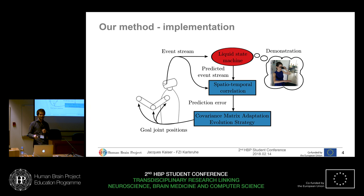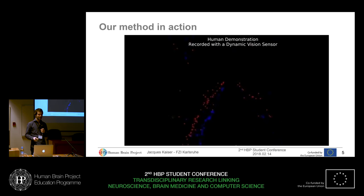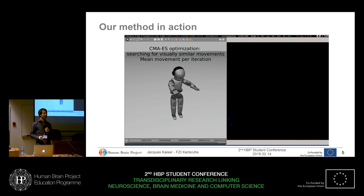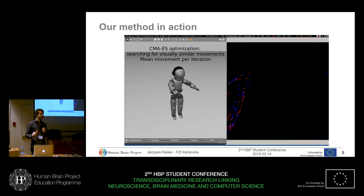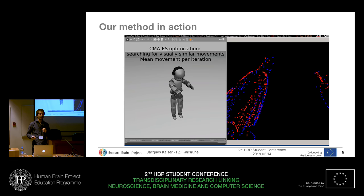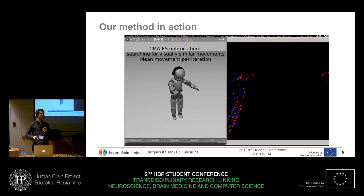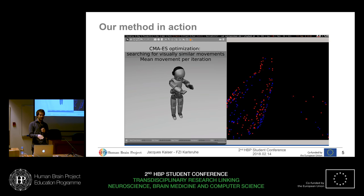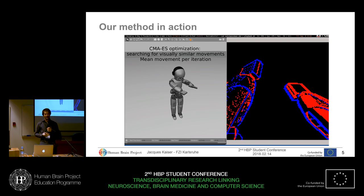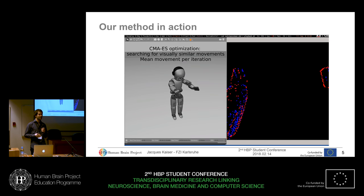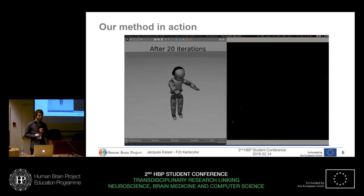Now I'm going to show you the actual experiment in a video. The first part of the video is the human demonstration — pay attention. It's basically two arms moving closer to each other, recorded with this dynamic vision sensor. Then we have an iCub in simulation with this optimization going on. The robot learned to predict the demonstration it saw from the human, and it tries different movements. If it can't predict well, the optimization keeps going. We're looking at the robot performing a bunch of actions, and after 20 iterations, you will see that the movements the robot has learned are actually quite similar to the human demonstration.